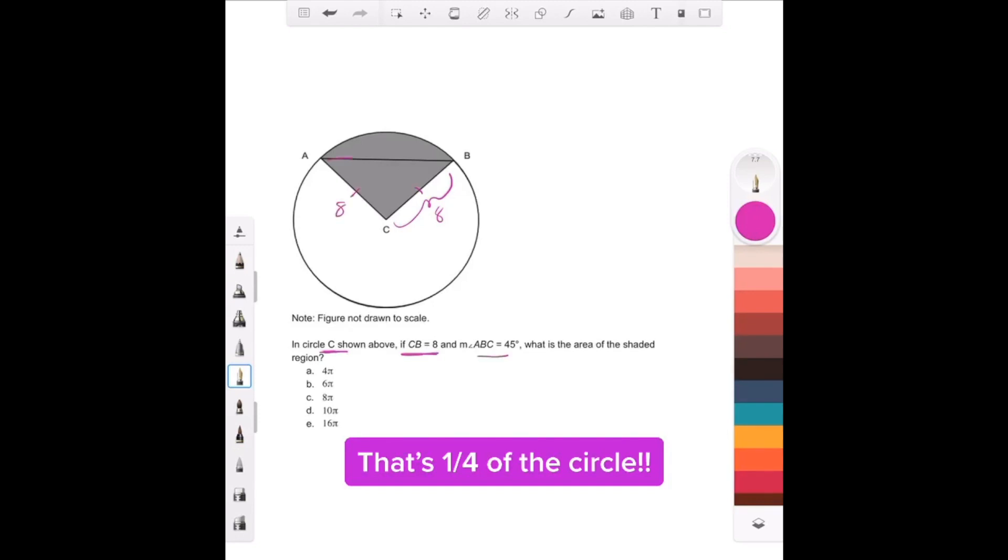ABC is 45, so this angle here is 45. Now remember, if you're dealing with a triangle, if the sides are the same, the angles opposite those sides are the same, so this would also be 45 degrees.